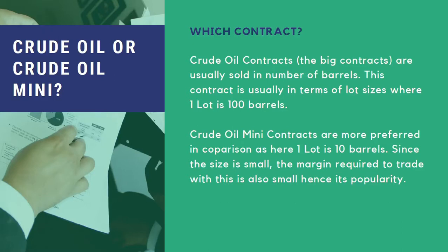We also have to know which contract of crude oil we prefer. The big crude oil contract is usually sold in number of barrels — one lot is equal to 100 barrels. Crude oil mini is smaller in comparison, where one lot is equal to 10 barrels. Since the size is small, the margin required to trade is also small, making it a very popular contract for small investors and retail traders.